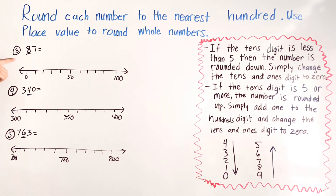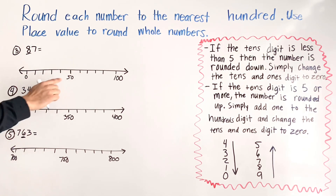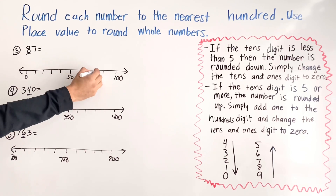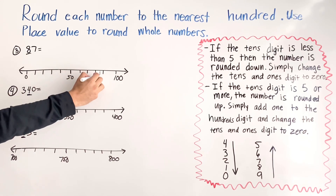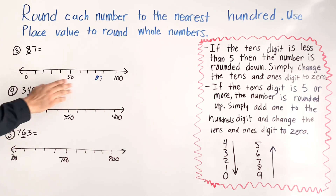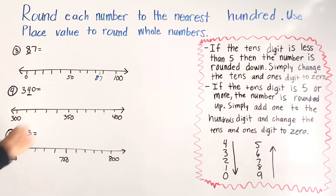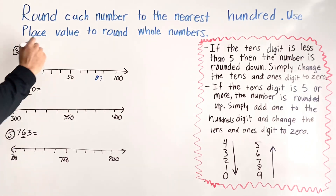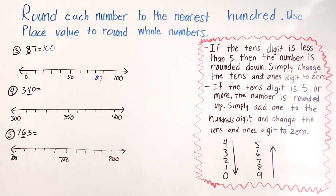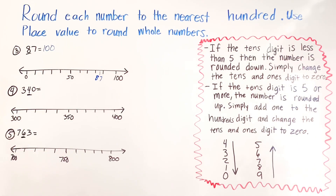For number four we have 87. We're looking at the tens digit, which is eight. On the number line: 50, 60, 70, 80 — so 87 is around here. Are we closer to zero or closer to 100? We're closer to 100, so we round to 100. Using the arrows, we look at eight — the arrow is going up — so we round up to 100.